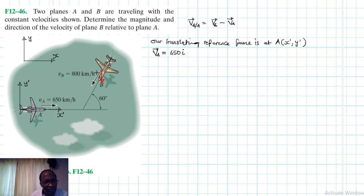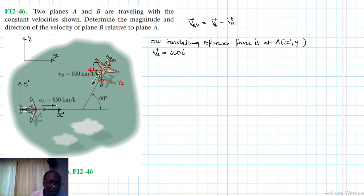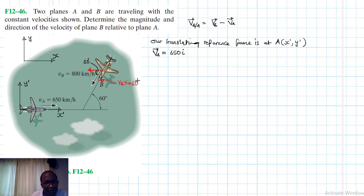VB has one component in the x-direction and another in the y-direction. This angle here is 60 degrees. So the components are VB sine 60 in one direction and VB cosine 60 in the other.